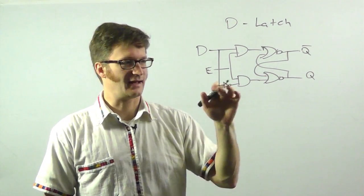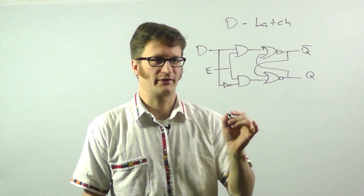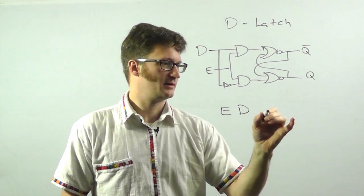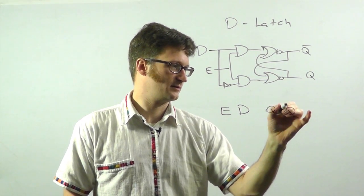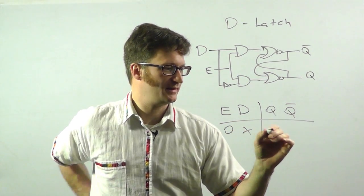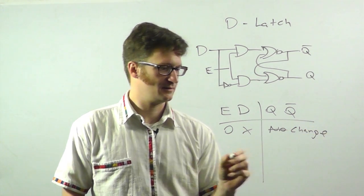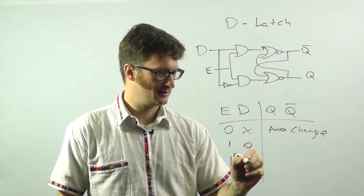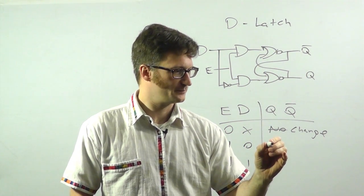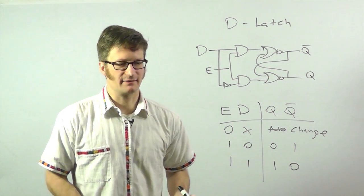What this D-Latch does is it gets rid of that pesky invalid state for us. Here is our table for this one. Enable is zero, it doesn't matter what D is. No change. If it is a one, Q mirrors what D is doing. So 1, 0, 0, 1. That's great.